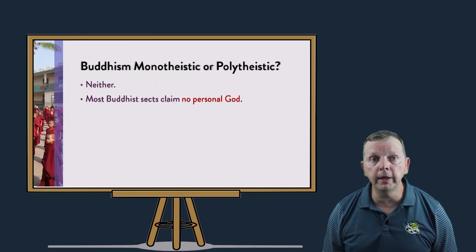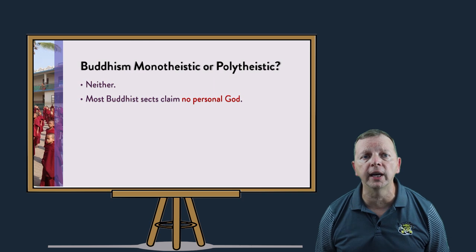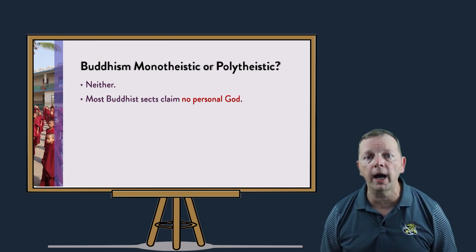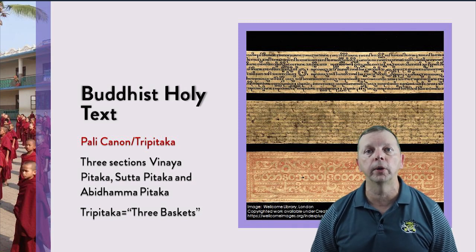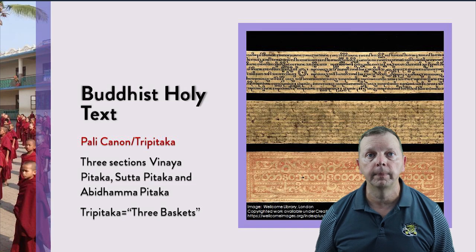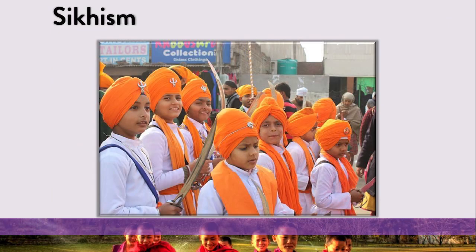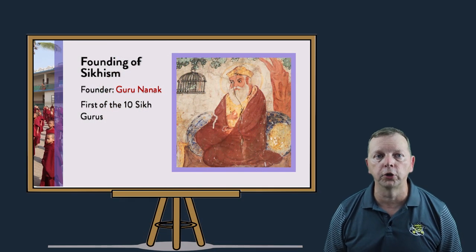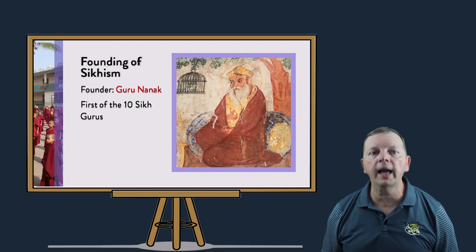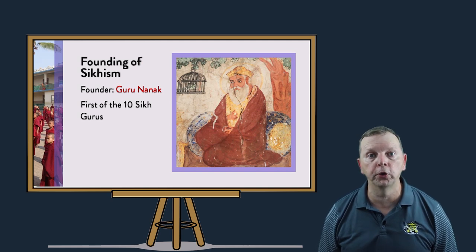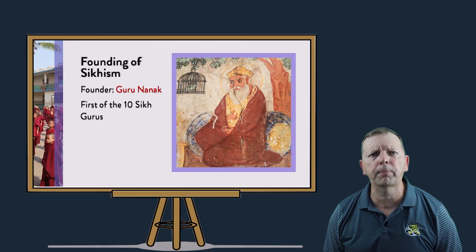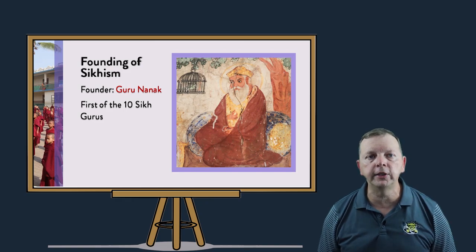Because Buddhism is the quest for enlightenment, Buddhism isn't actually about a god. In fact, most Buddhist sects do not profess to have a personal god, so they are neither monotheistic nor polytheistic. Buddhism does have a holy text, which is known as the Pali Canon. The Pali Canon has three sections, which is why it is also known as the Tripitaka — which literally means three baskets. And then there is Sikhism. Sikhism is the youngest of the world's major religions. Guru Nanak, born in 1469, is the founder of Sikhism and is also the first of ten gurus, or spiritual leaders, of Sikhism. The last of the Gurus is not a person at all, but Sikhism's holy text, the Guru Granth Sahib.